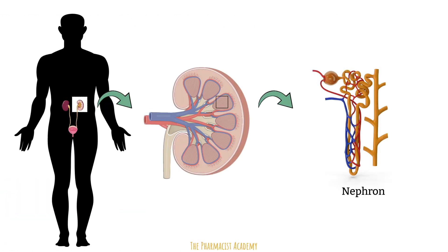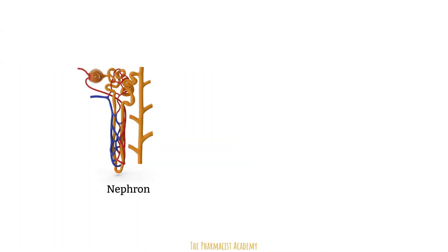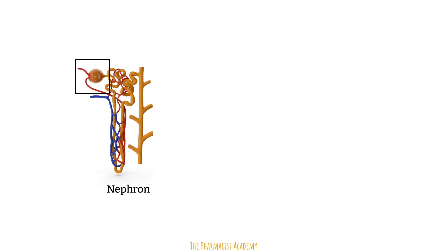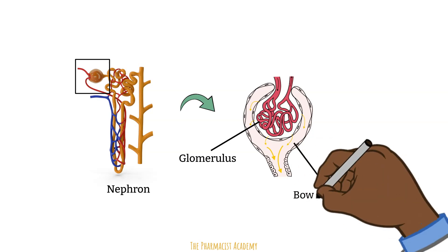The kidneys contain over 1 million nephrons, which are considered the basic functional units of the kidneys. Each nephron contains a filter called a glomerulus. The glomerulus is a network of small blood vessels that filters blood that enters the kidneys. The glomerulus is enclosed in a sac called the Bowman's capsule.